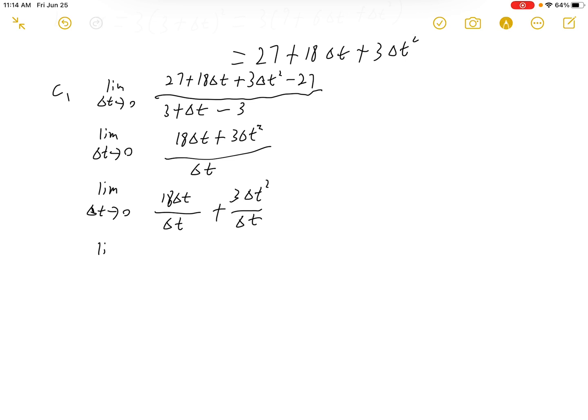So we have limit as Δt approaching zero. We have 18 plus 3Δt. And because Δt is approaching zero...